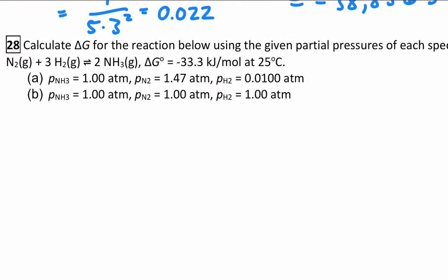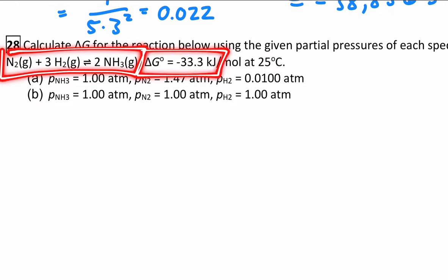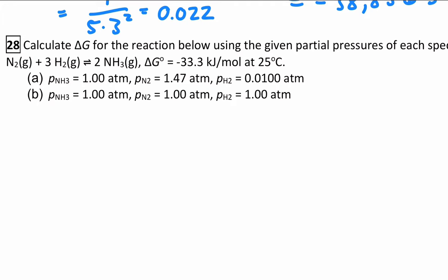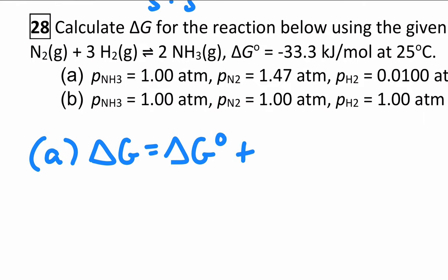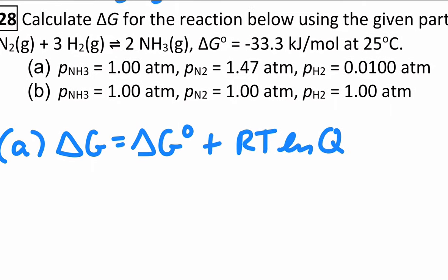So practice using this. Here's a different reaction. Now we have the synthesis of ammonia. They went ahead and gave you the standard delta G value. Practice using this new equation for both of these two states and get the non-standard delta G for parts A and B right there. So go ahead and hit pause and go ahead and see what you get for parts A and B using those values.